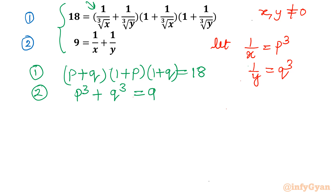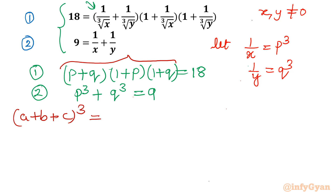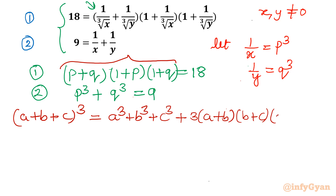Now I will use one strong and powerful algebraic identity which will simplify this. The expression p plus q times 1 plus p times 1 plus q reminds us of a formula. I will use the identity: (a + b + c)³ = a³ + b³ + c³ + 3(a+b)(b+c)(c+a). I will substitute a = p, b = q, c = 1.